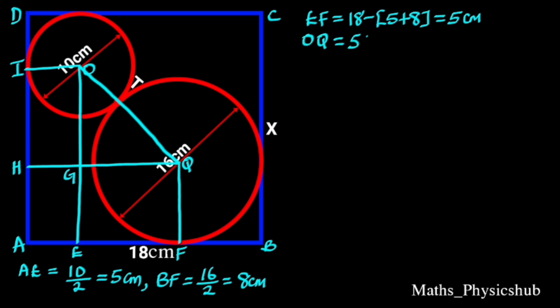OQ equals 5 plus 8, which is 13 cm, reason: external touching which is the sum of the radius of the two circles. GQ equals EF, which is 5 cm.